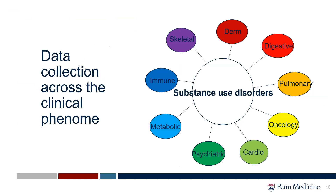Another great feature is that data is collected across the clinical phenome. In traditional GWAS studies, individuals are collected because they are a case for a specific disorder, but we don't know anything else about them. In biobanks, we know multiple phenotypes for each individual — a holistic view. This allows us to put substance use disorders and psychiatric disorders in the same realm as other medical disorders, whereas traditionally those things have been kept separate.